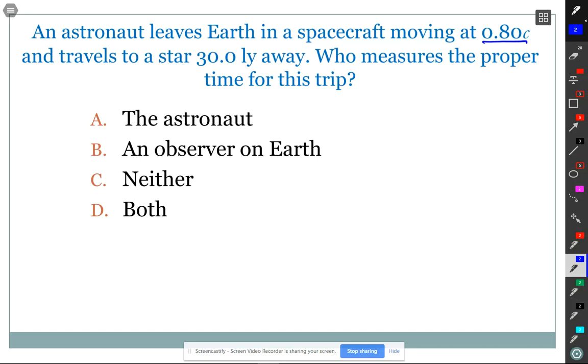The astronaut. All right. We got one for each. Now, let's work on our nomenclature. What does proper mean? Clock not moving. It doesn't mean correct. In fact, it means the one in the reference frame where the clock is not moving, which is always going to be the shortest time possible for the trip.